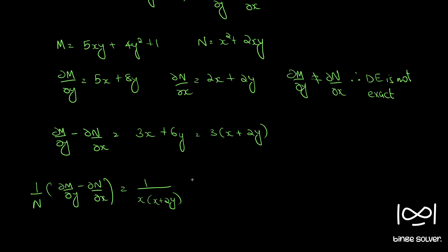x squared plus 2xy into 3 into x plus 2y. So x plus 2y cancels out and we get 3 by x.